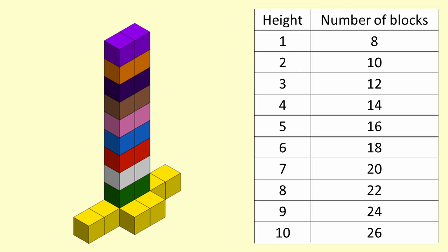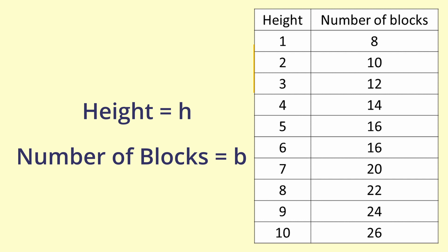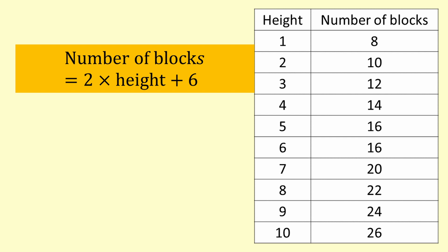What about if the tower is going to be 20 blocks high? This is getting a bit tedious to keep increasing the table, so we can write an algebraic expression that summarises the relationship between the height, h, and the number of blocks, b. The number of blocks equals 2 times the height of the tower, plus 6. We check that this works for the values we already know.